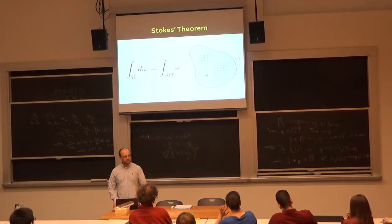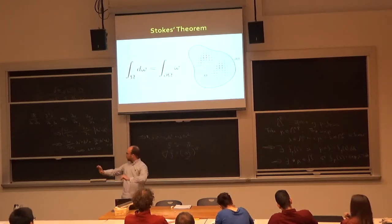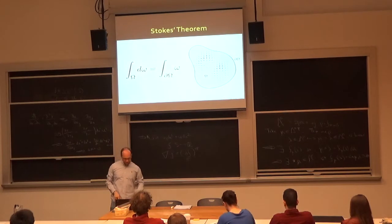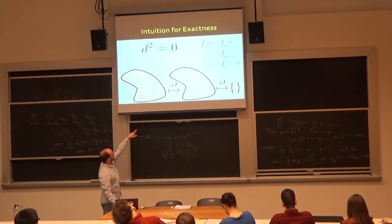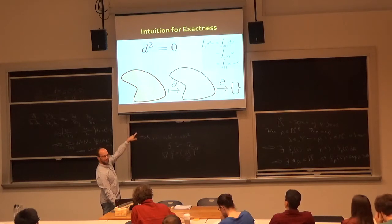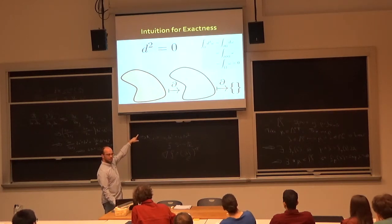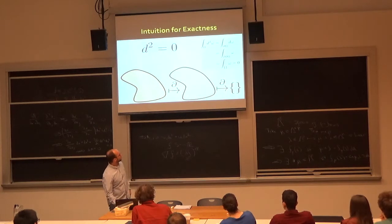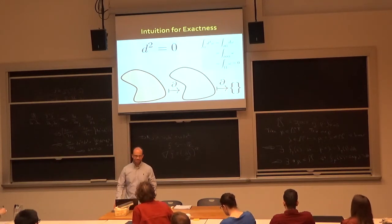Sebastian asked about d squared equaling zero. If you integrate d-squared-omega over a region, by Stokes' theorem twice, you integrate over the boundary of the boundary — which is the empty set — and get zero. So d squared equals zero is easy to understand in integrated form. The extra credit problem asks you to translate div, grad, curl into d and star notation, and show that d squared equals zero encodes all these classical identities. There's a nice table of every operator expressible this way.